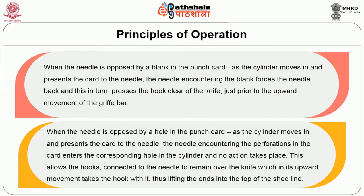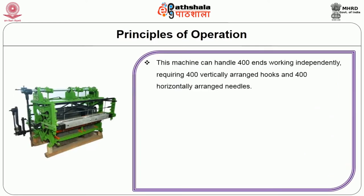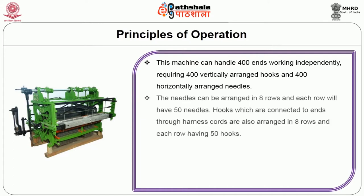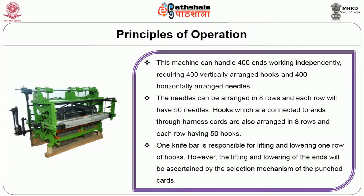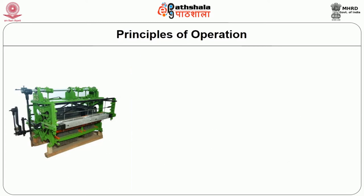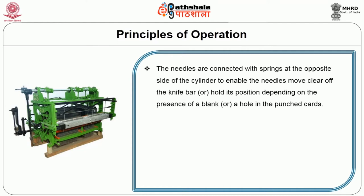Consider a 400-hook capacity jacquard machine. This machine can handle 400 ends working independently, requiring 400 vertically arranged hooks and 400 horizontally arranged needles. The needles can be arranged in rows of 8, with each row having 50 needles. Hooks, which are connected to ends through harness cords, are also arranged in rows of 8, each row having 50 hooks. One knife bar is responsible for lifting and lowering one row of hooks. The lifting and lowering of the ends is ascertained by the selection mechanism of the punch card. The needles are connected with springs at the opposite side of the cylinder to enable the needle to move clear of the knife bar or hold its position depending on the presence of a blank or a hole in the punched card.